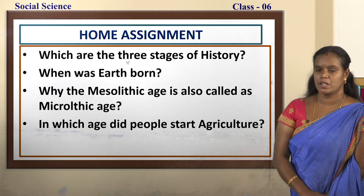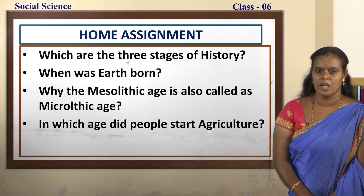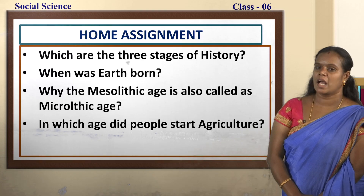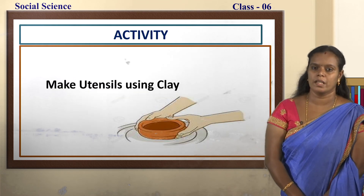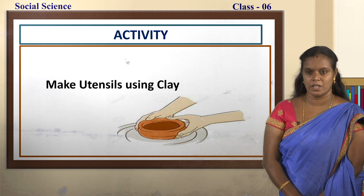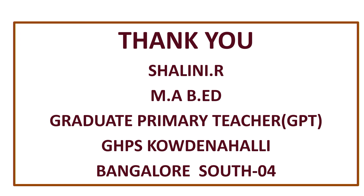This is your home assignment children. I want everyone to make a note of all these questions, answer them, and show it to your respective teachers. The four questions are: Which are the three stages of history? When was earth born? Why is the Mesolithic age also called the Microlithic age? In which age did people start agriculture? Also make utensils using clay along with your friends, using natural or artificial clay. Thank you children. This is Shalini from GHPS Kaudenali, Bangalore South.